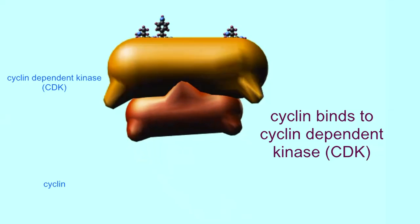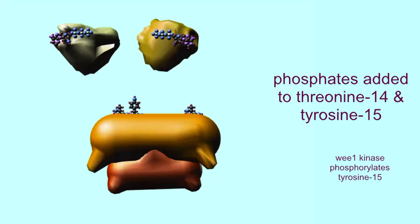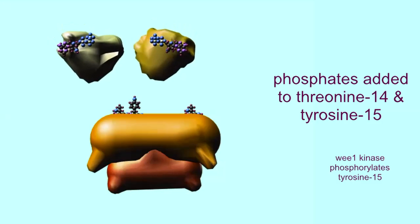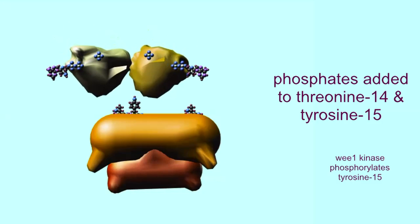For example, in the cycle, a cyclin molecule will bind to the corresponding CDK enzyme. This changes its shape and allows for the phosphorylation of two amino acids.